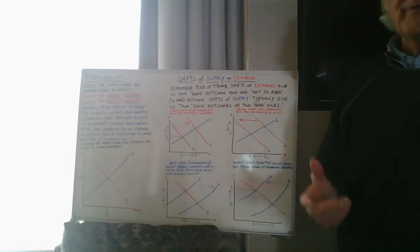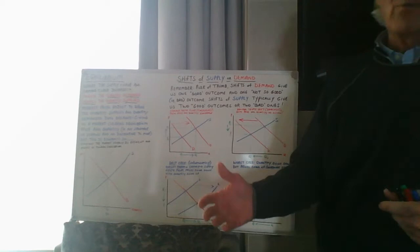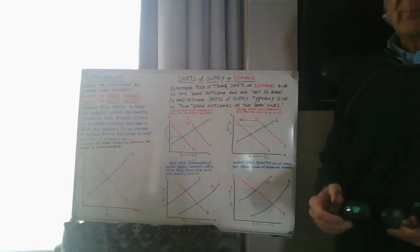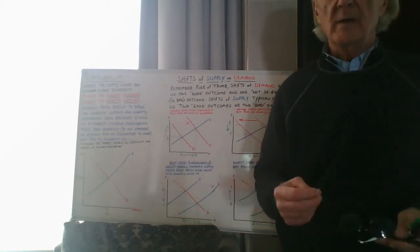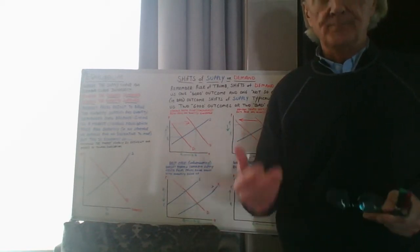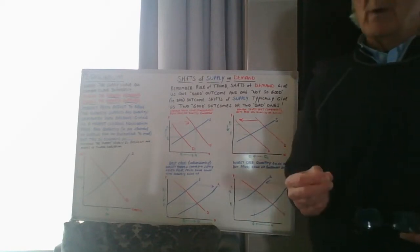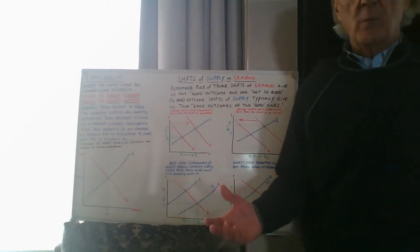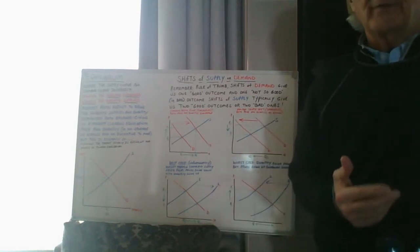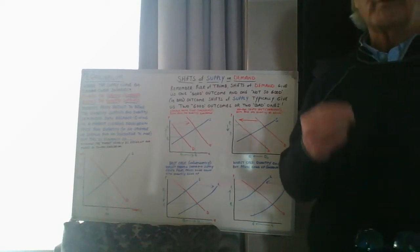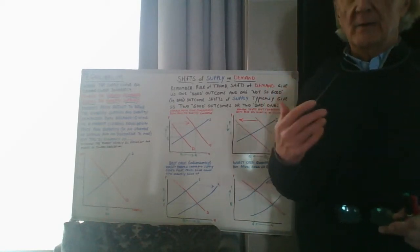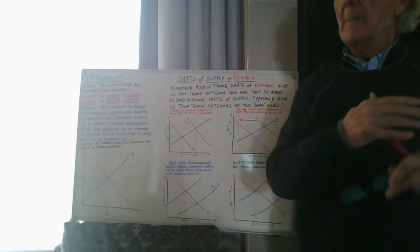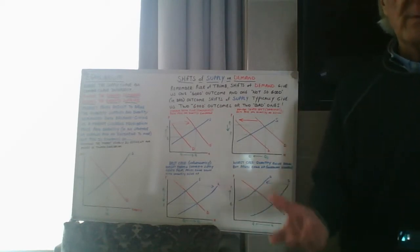We have either/or decisions or marginal decisions. We also talked a bit about quantity demanded and demand, and quantity supplied and supply. Quantity demanded is one point; demand is all the points of quantity demanded at every price point. Quantity supplied is one specific quantity that suppliers want to supply at a particular price point; supply is all the quantity supplied at every price point.